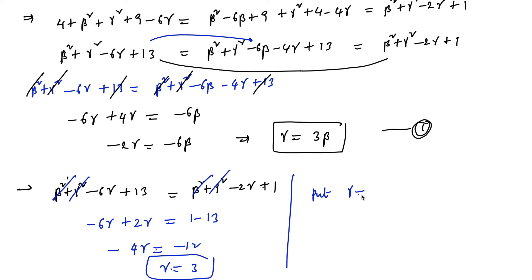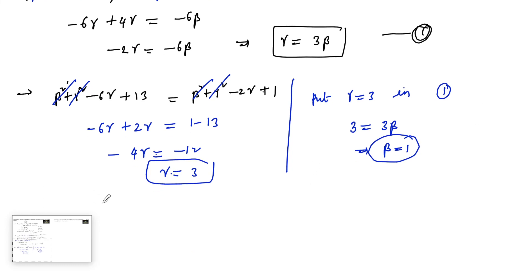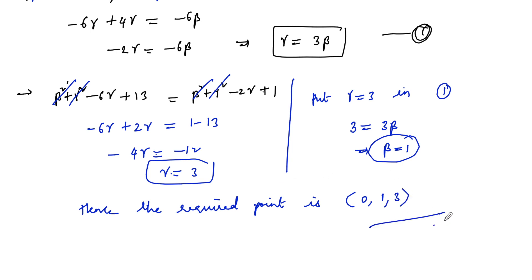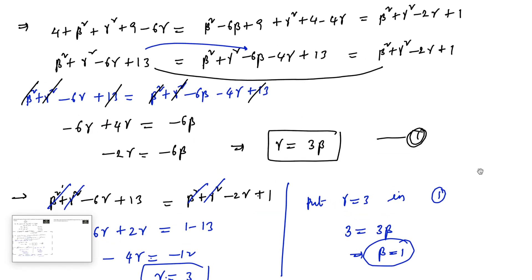Substituting γ = 3 into equation 1: 3 = 3β, which gives β = 1. Hence the required point on the YZ-plane is (0, 1, 3), such that PA = PB = PC.